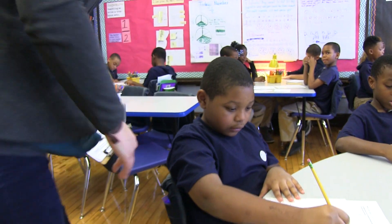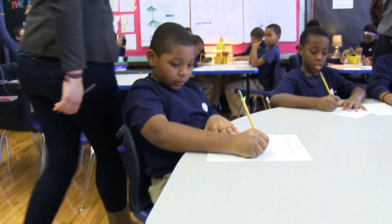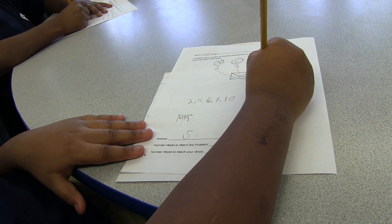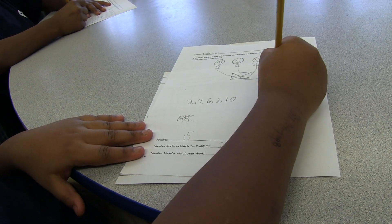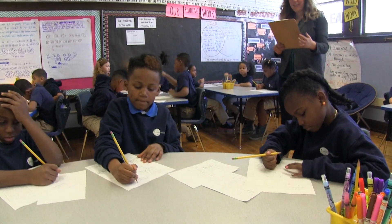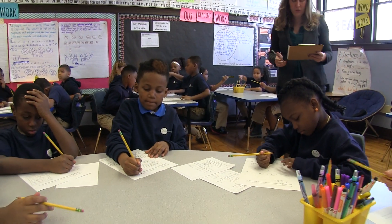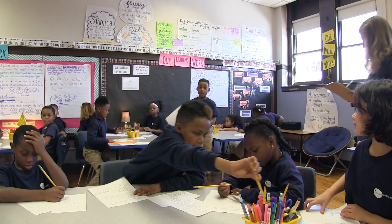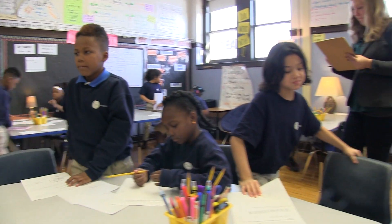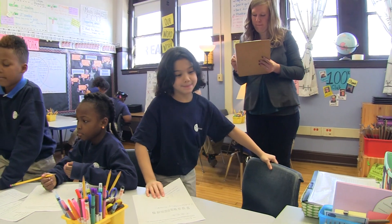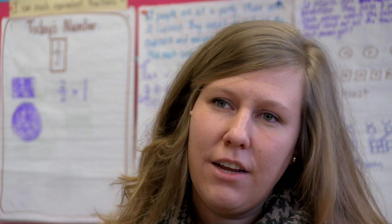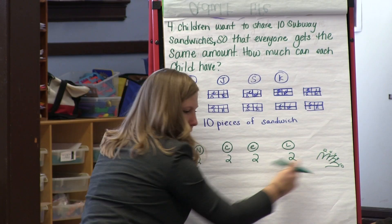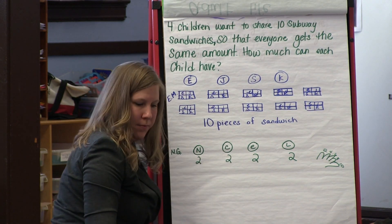He was doing some thinking that I thought was really important for some of the other kids to see. Mona asks Ilani, Vashon, and Nairobi to bring their work to the rug. Then we move to the rug, sit in a circle, and kids listen to their peers share out their strategies and question them while I chart it up.